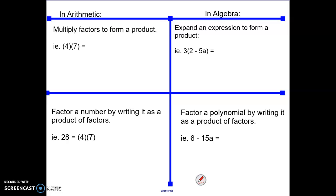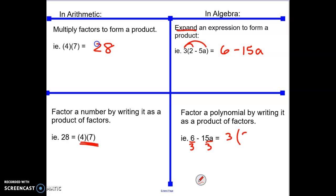In algebra, when we're dealing with our polynomial, we expand it to multiply it — multiplying that 3 in to get 6 minus 15. But factoring is the opposite: factoring is dividing something. So when I look at 6 and 15, what number goes into both? 3. So if I divide them both by 3, we get 2 minus 5. Multiplying and dividing are opposites of each other, and it works the same way in algebra as it does in arithmetic.